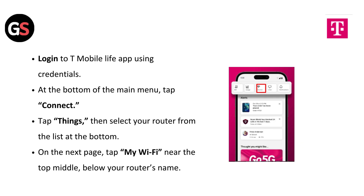Log into the T-Life app using your credentials. At the bottom of the main menu, tap Connect, then tap Things. Then select your router from the list at the bottom.